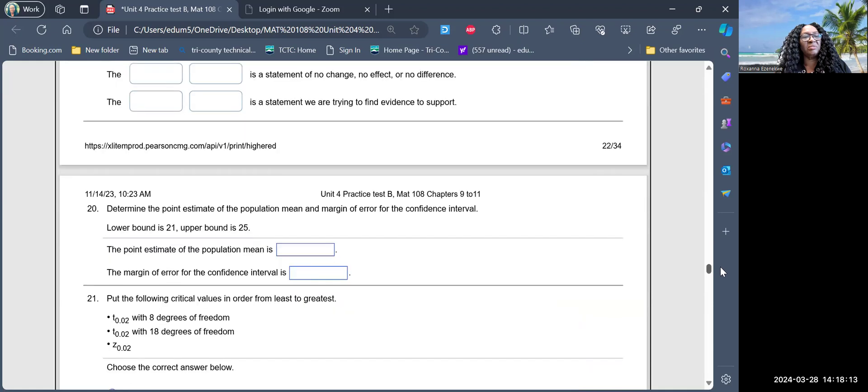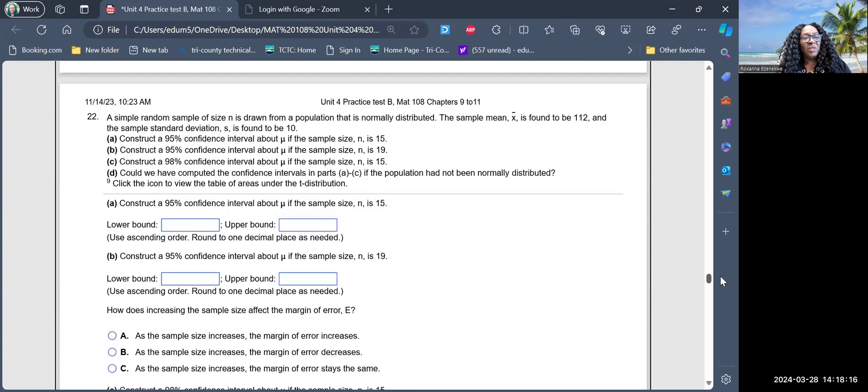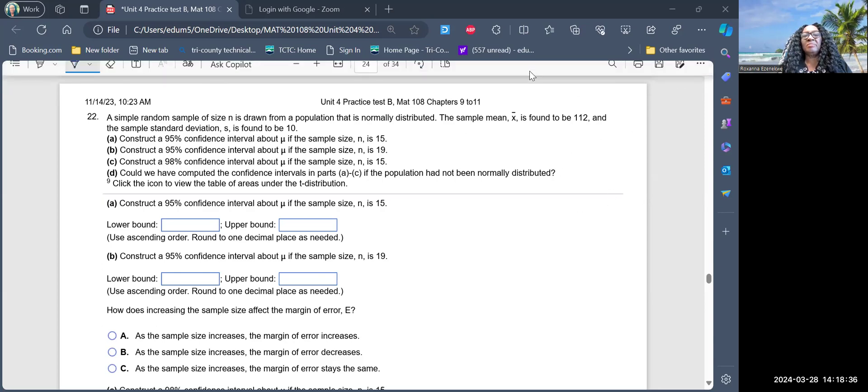Let's answer the ones we have seen. A simple random sample of size n is drawn from a population. We're not here yet. So what I'm going to do now, I can stop share and stop recording for now so that I can get the questions that I need, so that I will make it short and simple.